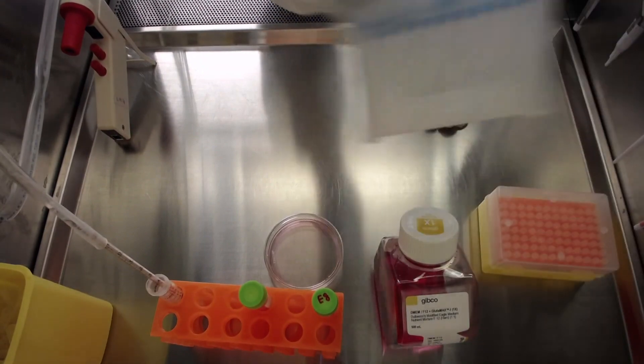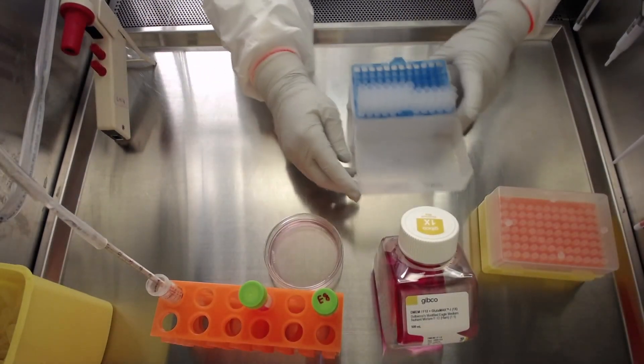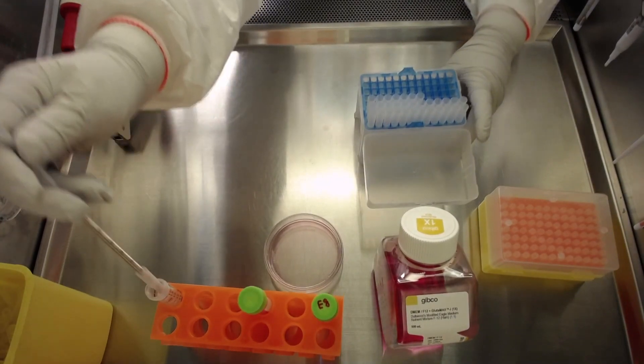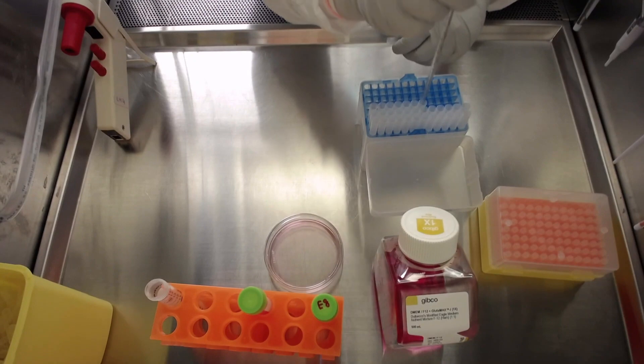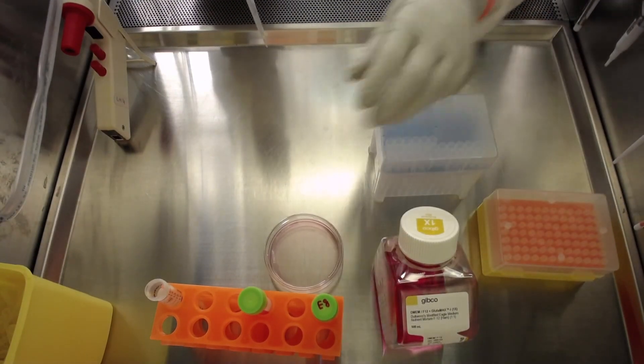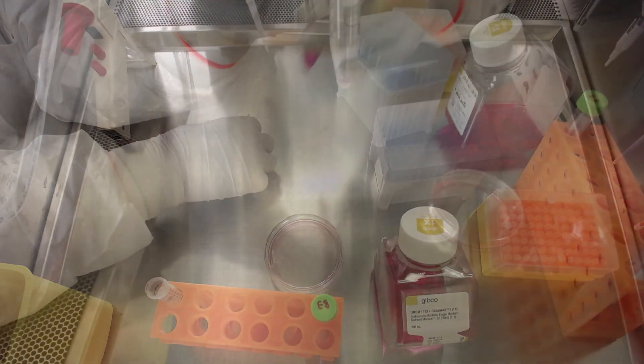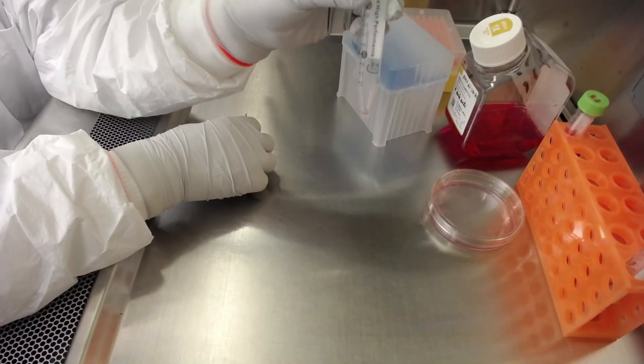Long exposure of cells to dimethyl sulfoxide can lead to cell death. To avoid it, remove as much as possible of the supernatant containing dimethyl sulfoxide by using vacuum aspiration. Make sure to not disturb the cell pellet. The cell pellet should still be visible at the bottom of the tube as shown.